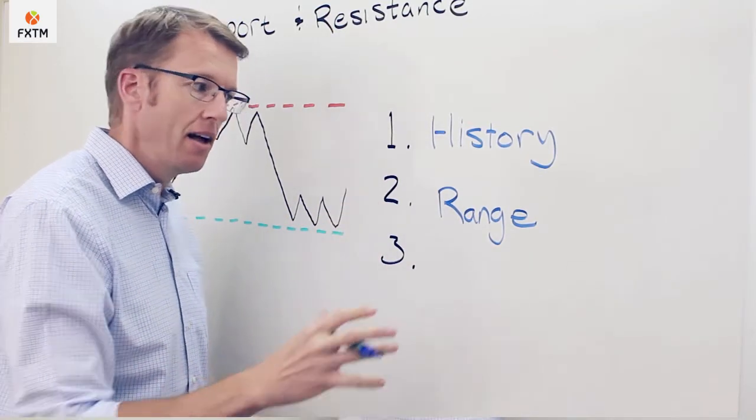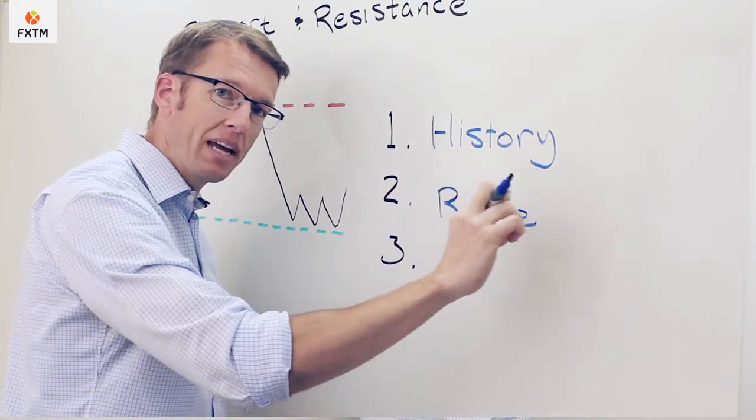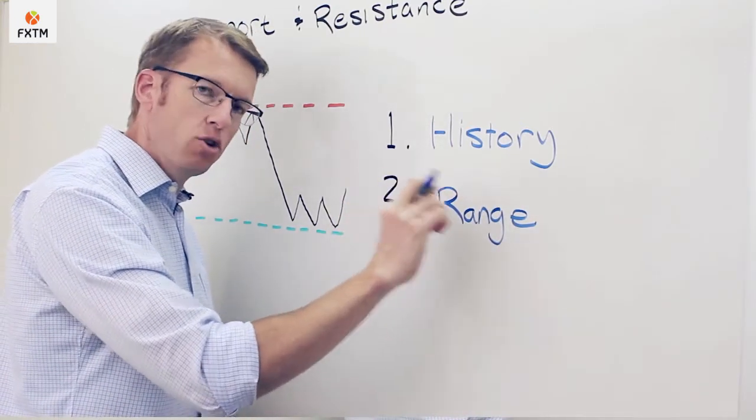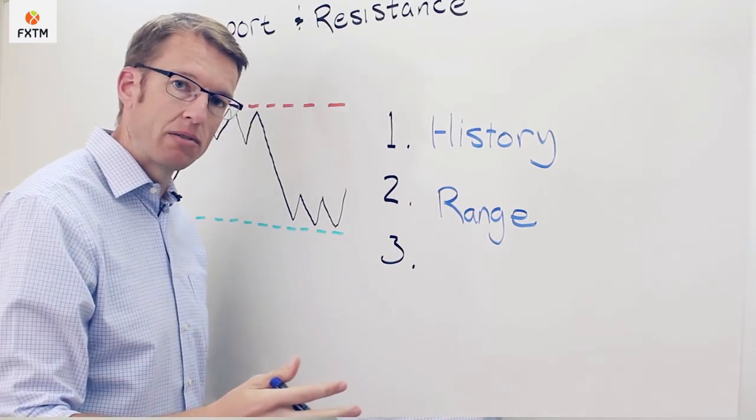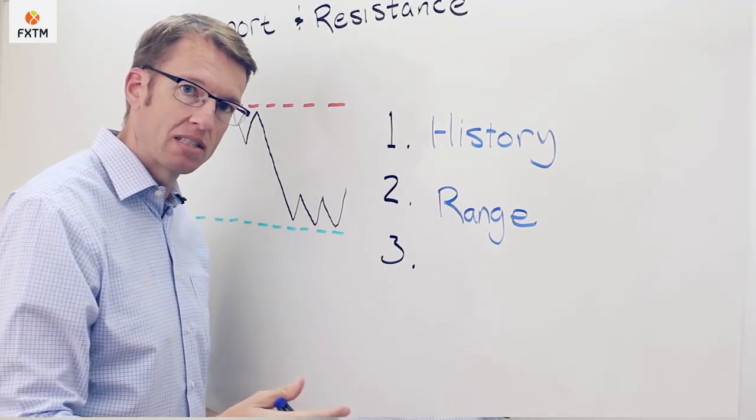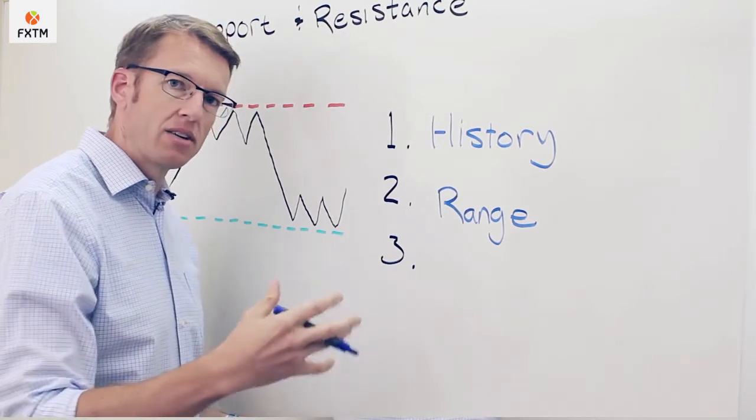Rather, a fairly wide range where we want to see good evidence that the price was either closing above and invalidating that resistance level, or closing below and invalidating that support level, before considering that it's actually been crossed.